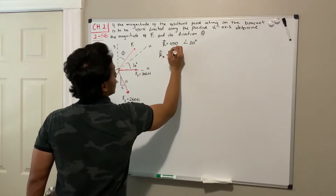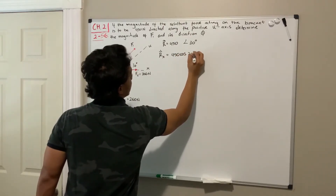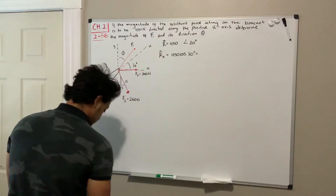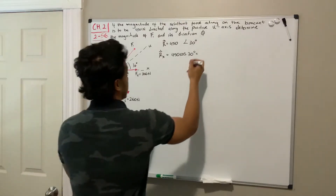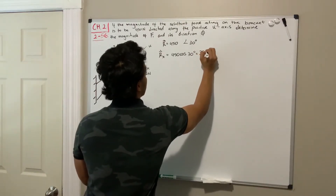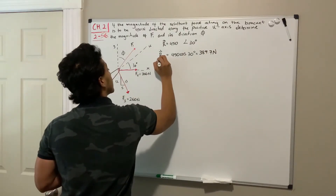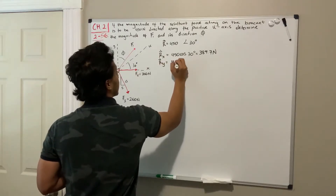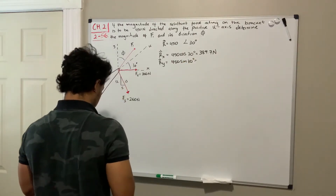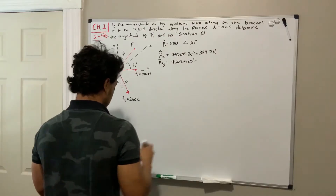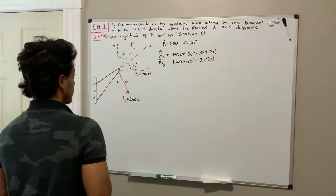To find R in the x-direction, it's going to be 450 multiplied by the cosine of 30 degrees. If we do that, we get 450 times cosine of 30, which gives us 389.7 newtons. The resultant in the y-direction is going to be 450 multiplied by the sine of 30 degrees, so 450 sine of 30, which gives us 225 newtons.